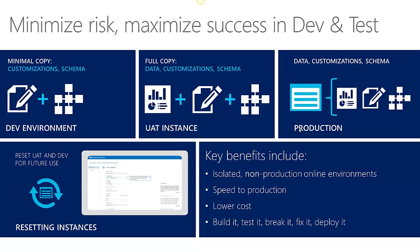If you have more than 25 professional user licenses within your organization, you receive a free test organization. You can always build, test whatever you build, break it, fix it, deploy it, reset it — you are the master of your organization. One important thing to know is that all the organizations you have, the production and the non-production, share the same data space. So if you have, let's say, 10 gigs of space, all those production and non-production instances are sharing those 10 gigs.